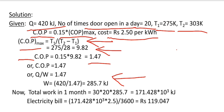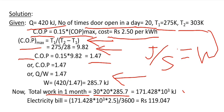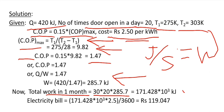Now we calculate the total work in one month given to the refrigerator. The total work is equal to 30 multiplied by the number of times the door is open per day, multiplied by the work per opening of 285.7 kJ. So the total work in one month is 171.428 into 10 to the power 3 kJ. Since Joules per second equals Watts, to convert to kWh we divide by 3600.